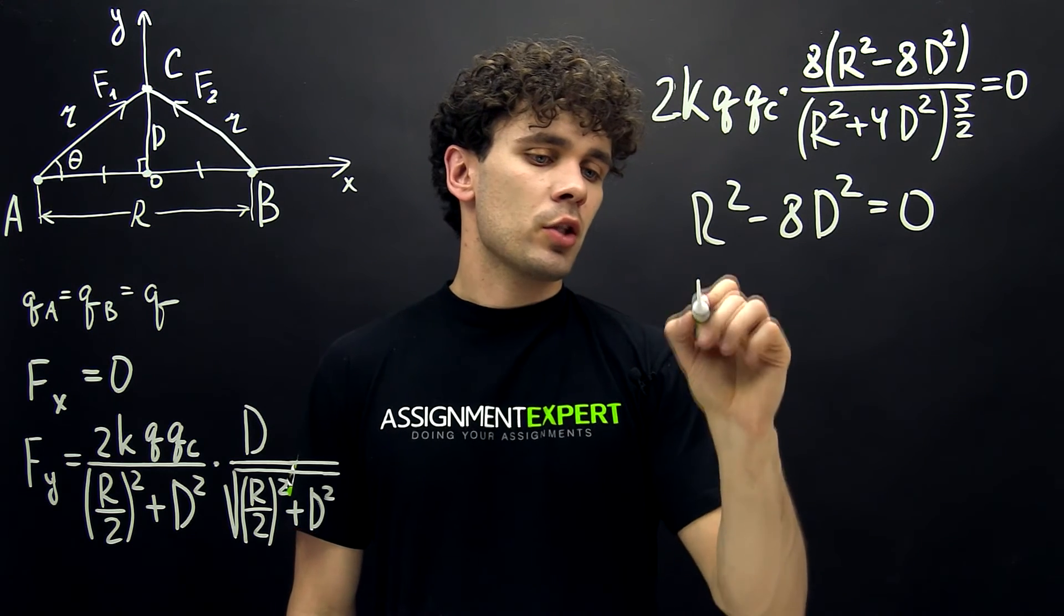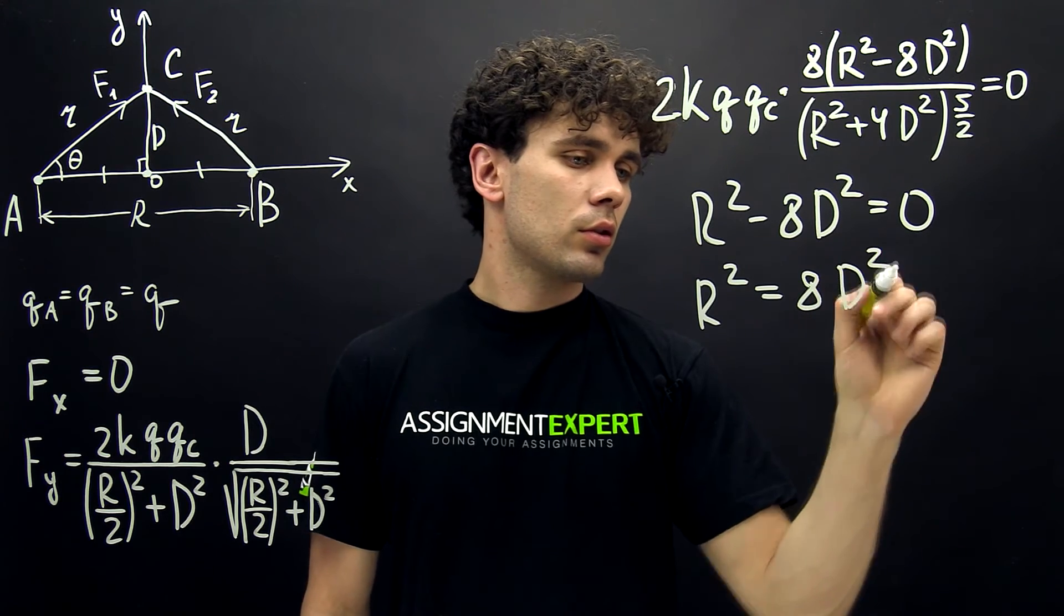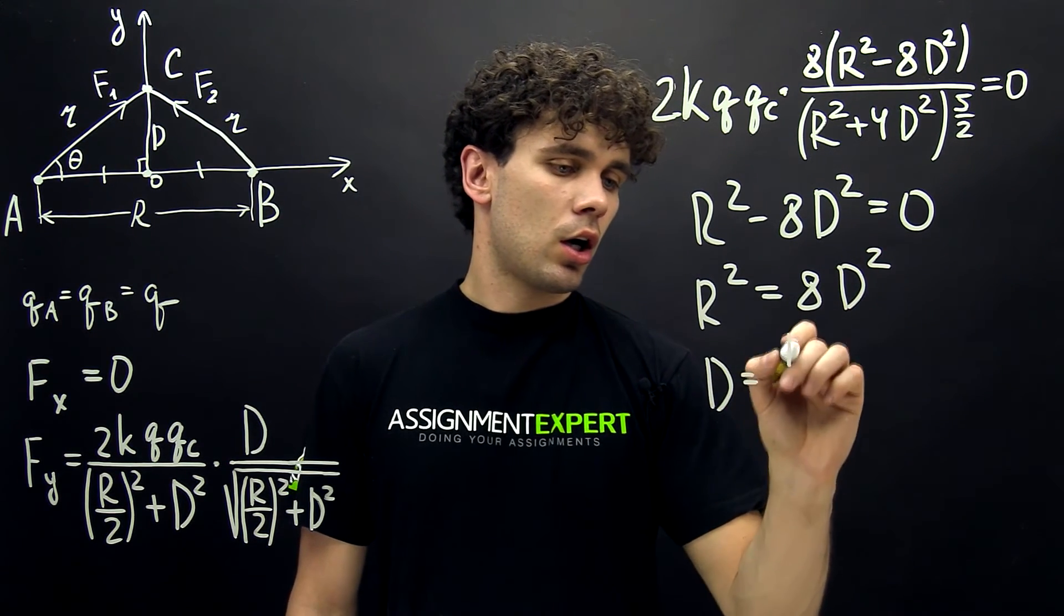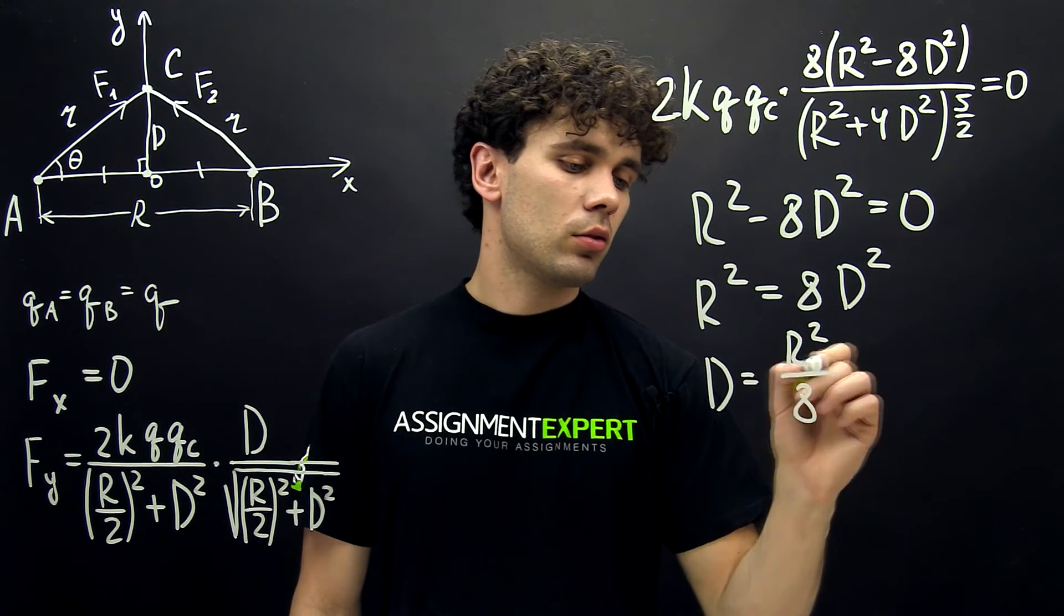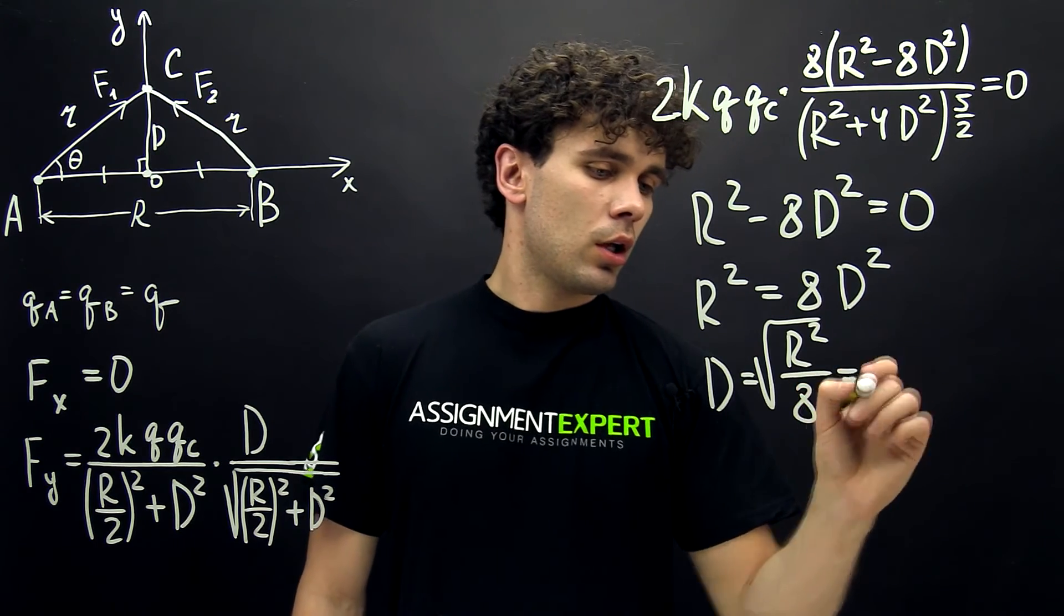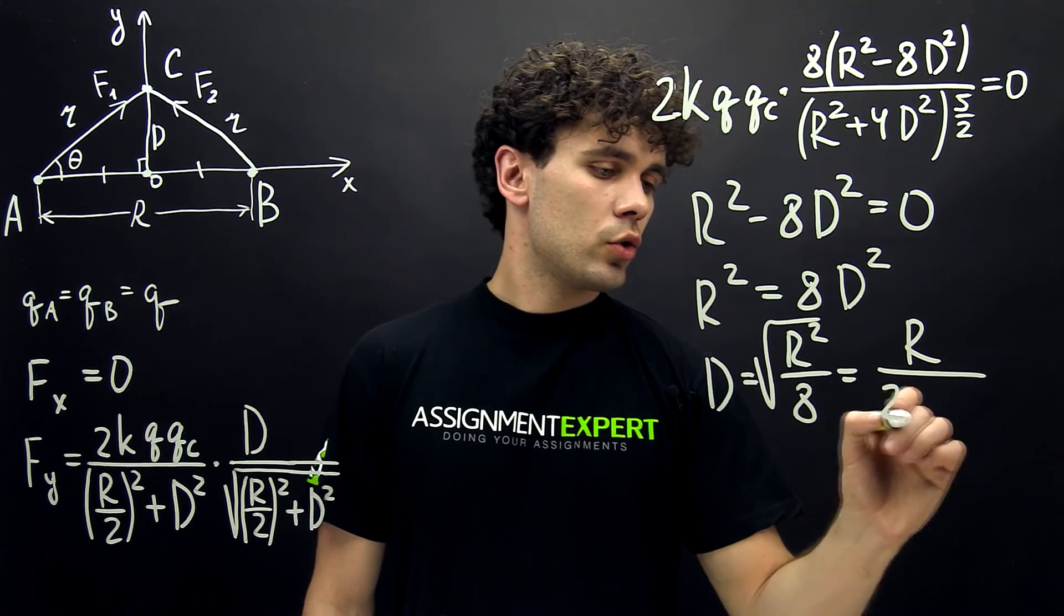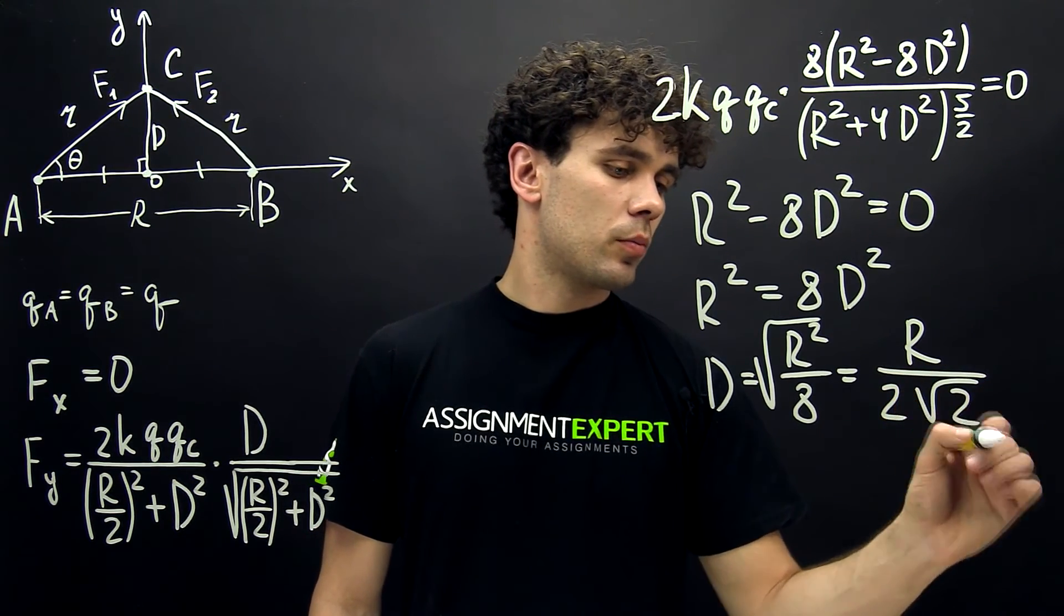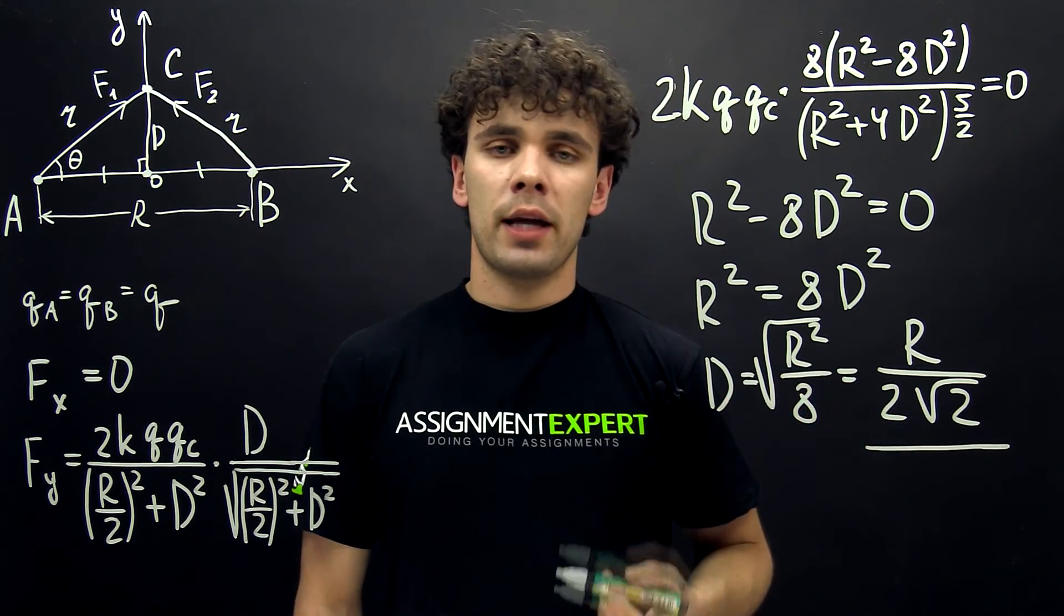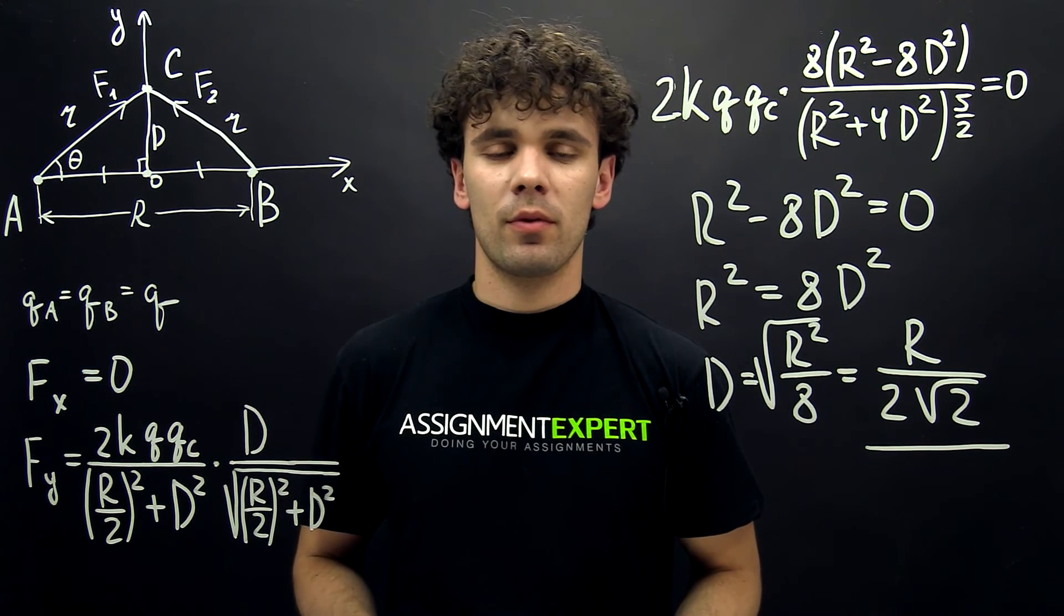This gives us R squared equals 8D squared. And from here, D equals the square root of (R squared over 8), and this gives us R over (2 times the square root of 2). So at this distance D, the electrostatic force applied to point C will be maximum. Thanks for watching.